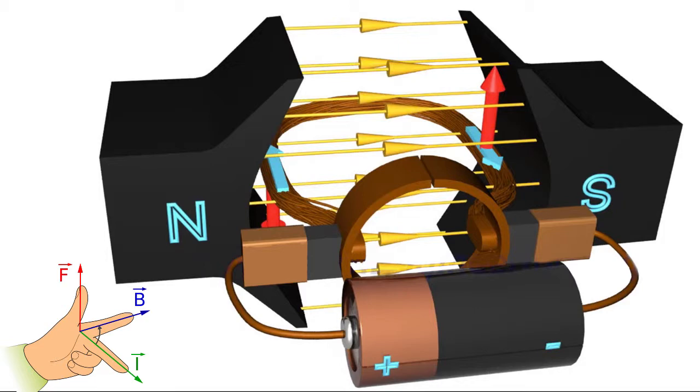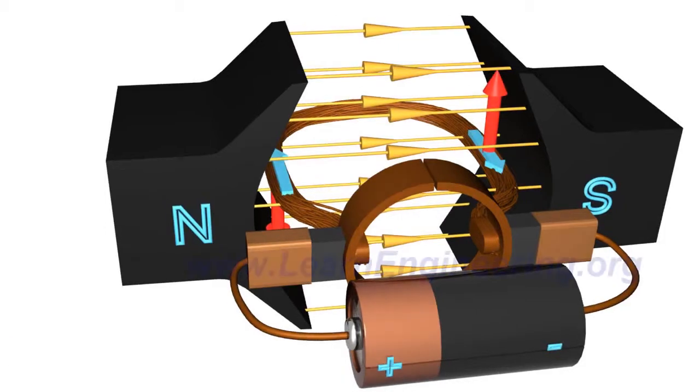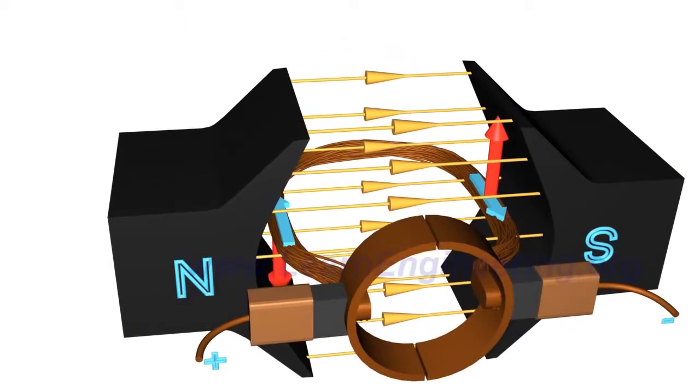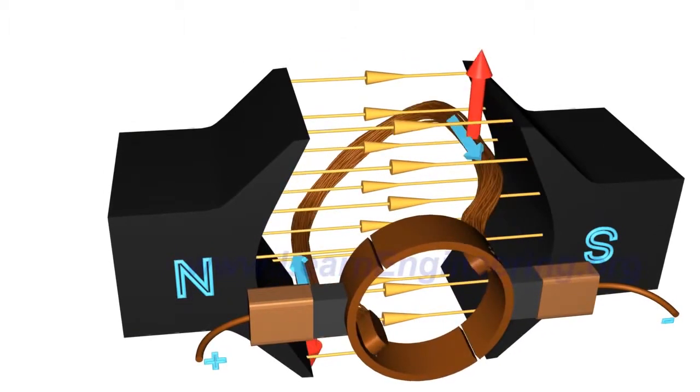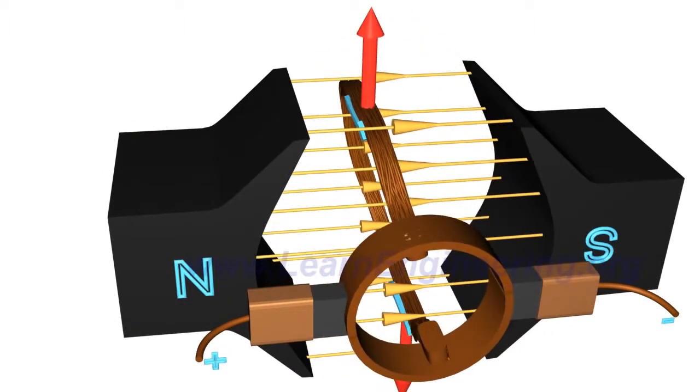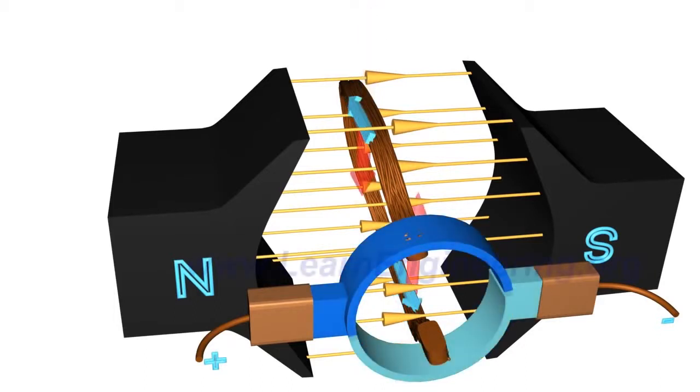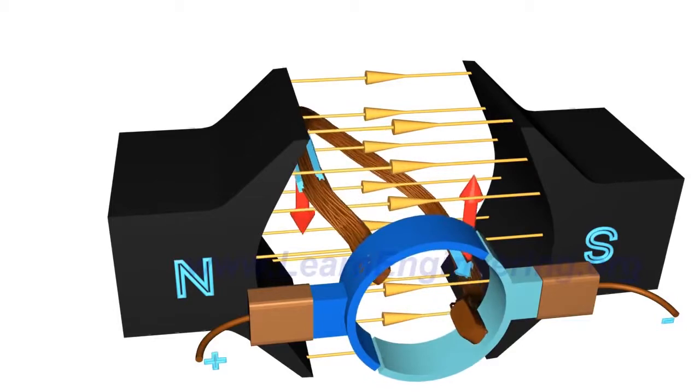These opposing upward and downward forces create torque, which causes the armature to rotate. When the armature rotates, the commutator rings connect with the power source of opposite polarity, making sure that the torque is always in the same direction and causing continual rotation.